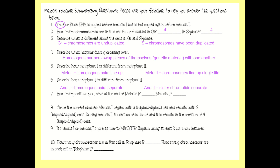At the end of meiosis 1, take a look at your two cells — you have two cells. At the end of meiosis 2 you should have four cells. Remember, meiosis results in four unique sex cells at the end of the process.